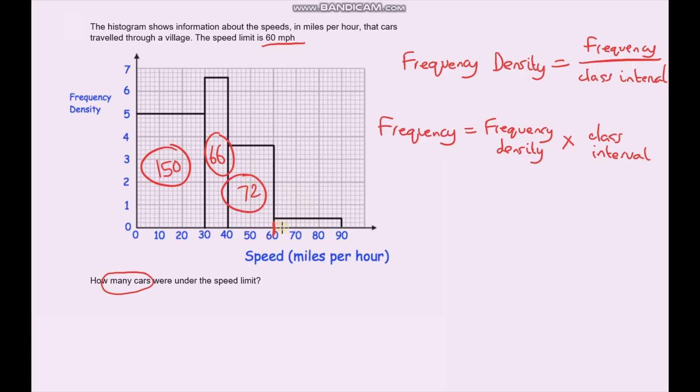We don't even need to calculate this last one because we're only interested in the cars that were under the speed limit. So we just need to add up all of these numbers. 150 plus 66 plus 72. 6 plus 2 gives us 8, 6 plus 7 is 13, plus 5 is 18. Carry the 1. 1 plus 1 is 2. So there were 288 cars under the speed limit. And how I did that? I just calculated the total frequency by calculating the area of each bar and then adding them together.